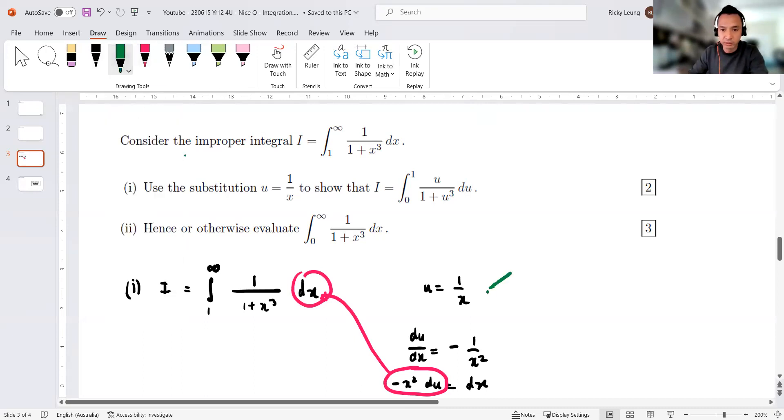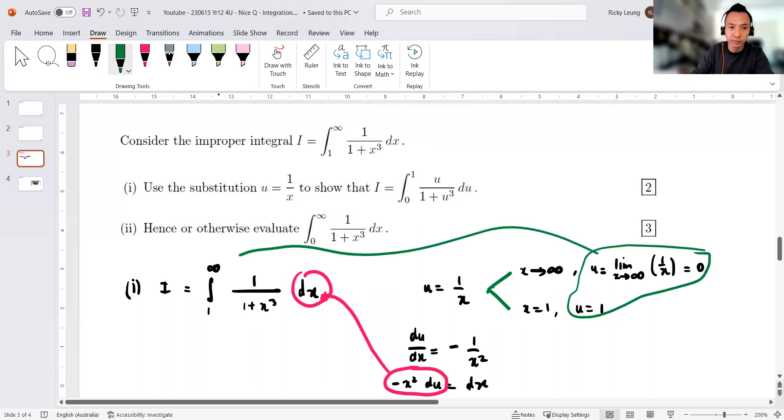All right, so I'm going to plug this guy as part of my substitution and replace this. Now the limits are fun. For the limits, you just got to be careful because when x approaches infinity, then your u should approach, or you can go equals to the limit as x approaches infinity of 1/x, which we know is zero. That's really the crux of this question, right? For the limit, you just got the u substitution to replace it with zero. And then when x equals one, then u equals one.